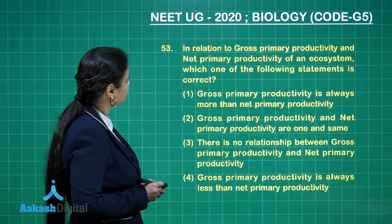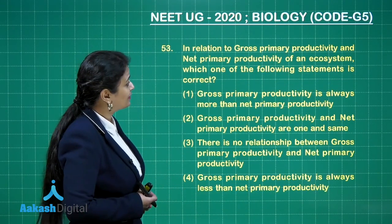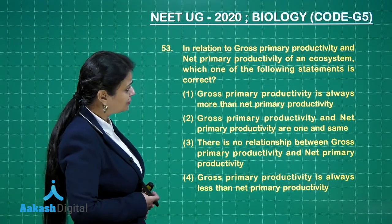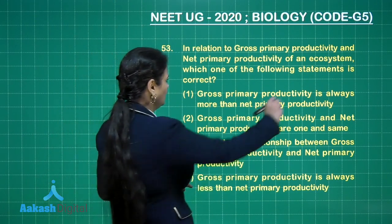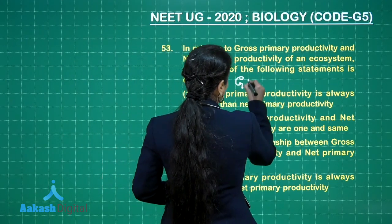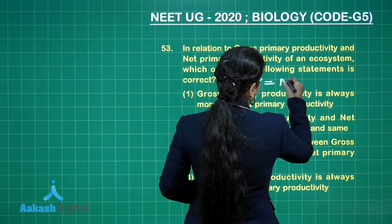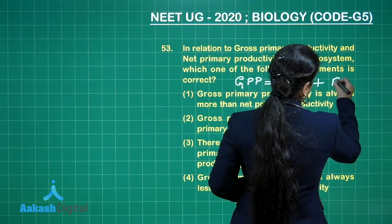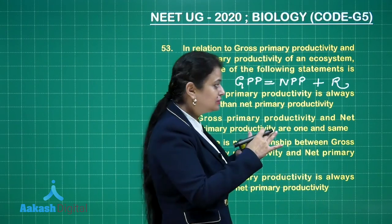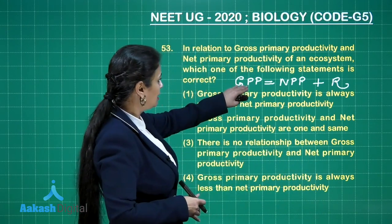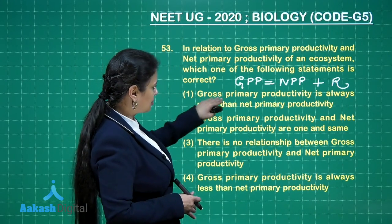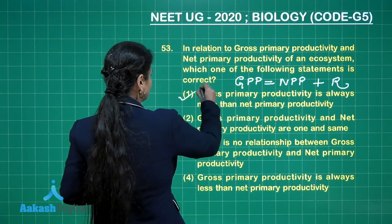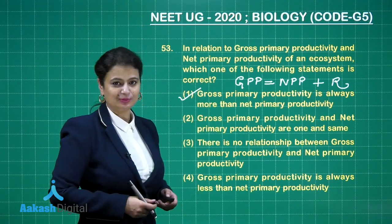In relation to gross primary productivity and net primary productivity of an ecosystem, which statement is correct? This is a straightforward question. Gross primary productivity (GPP) equals net primary productivity (NPP) plus respiratory loss. This means GPP is always more than NPP. So gross primary productivity is always greater than net primary productivity — that is the answer.